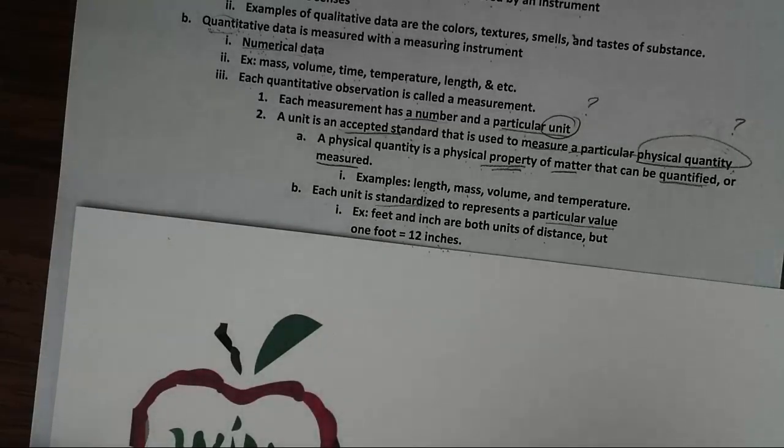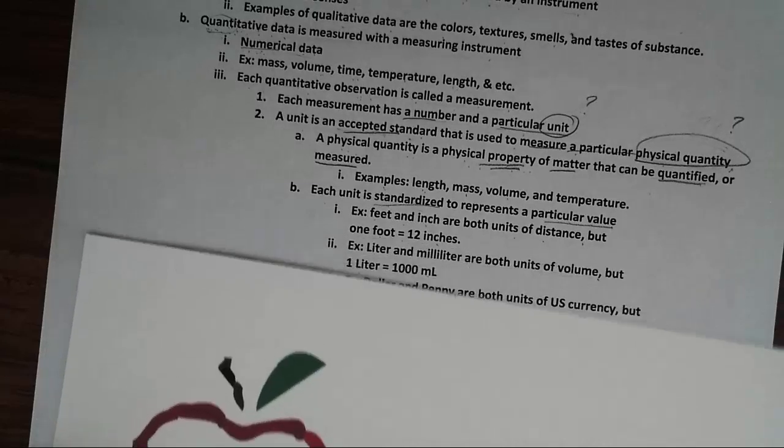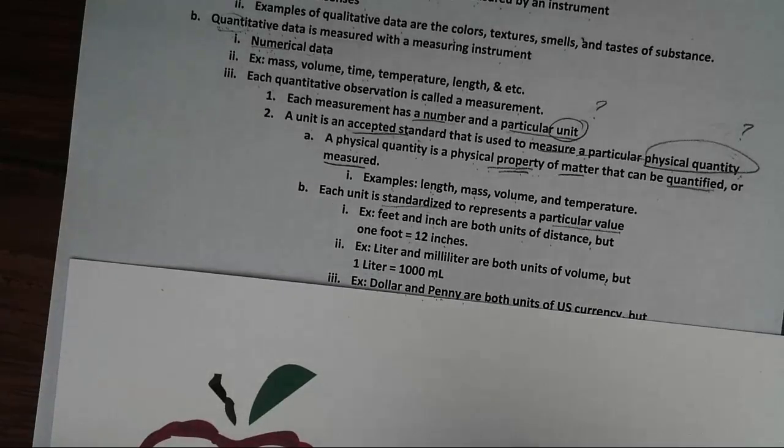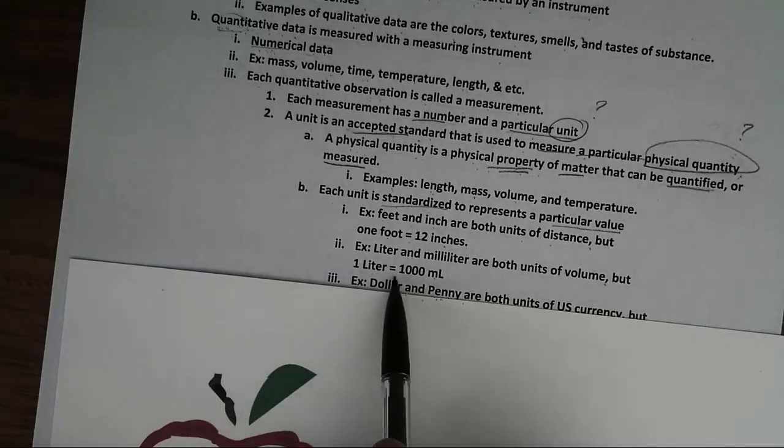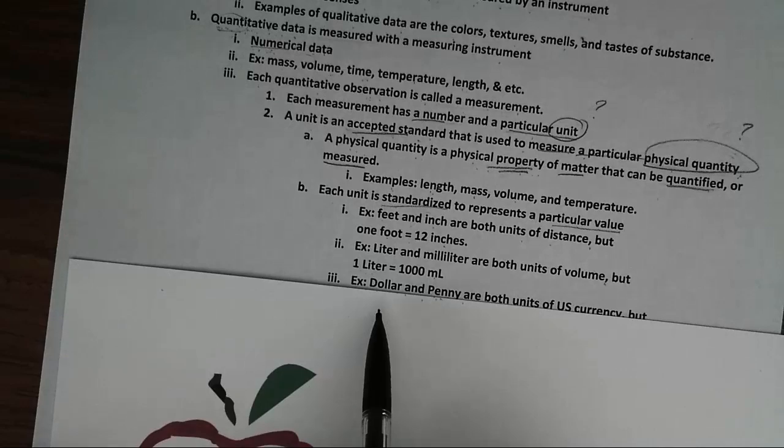As we can see, each unit represents a specific value even when they are used to measure the same physical quantity. Other examples of units are liters and milliliter. Both units are used to measure volume of the substance. However, one liter is a lot more than one milliliter because one liter is equal to 1,000 milliliter.